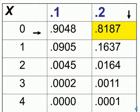And so we look at that row, at that column, and we see that the probability for having zero accidents in that period of time would be about 82%.